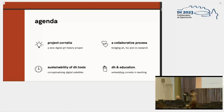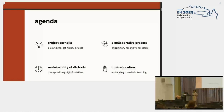I'm going to talk about four main components. The first is a short introduction to Project Cornelia. Then I'll discuss the collaborative process — the interdisciplinary work we've been doing between art history, human-computer interaction, and information visualization research. The next part will be about sustainability and long-term use of these tools, introducing the concept of digital satellites. And then a short word on using Project Cornelia as a tool for education.